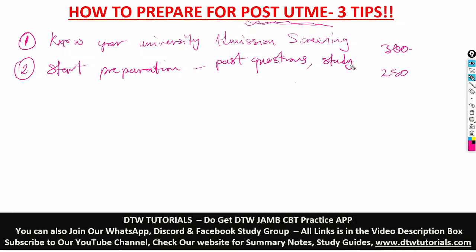Create a study plan for yourself. You have roughly three months — June, July, August — before the September intake, so don't think there's so much time. Failing to plan is planning to fail. Create a study timetable: I'm going to read three hours a day. Make sure every day you are reading something, at least two to three hours, even if you feel relaxed after exams.